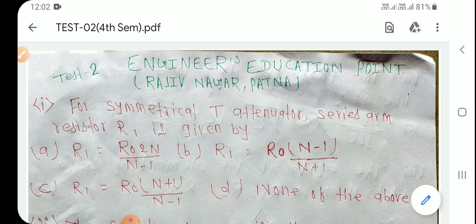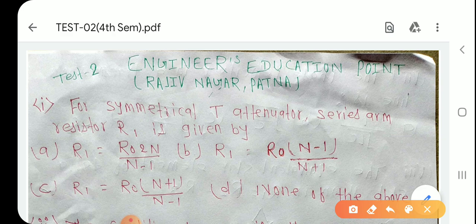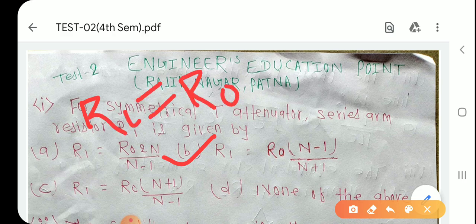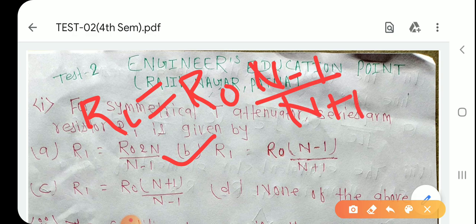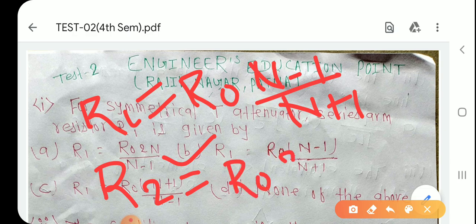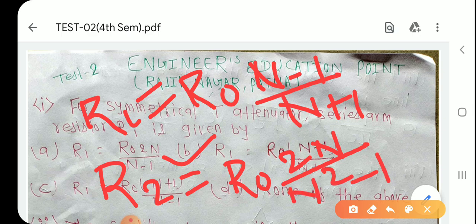Question number 1: For a symmetrical T attenuator, the series arm resistor R1 is given by R1 = R0 × (N−1)/(N+1), and R2 = R0 × 2N/(N²−1).